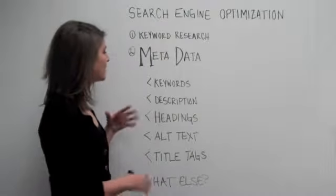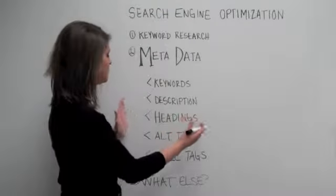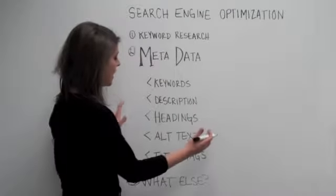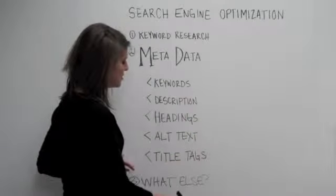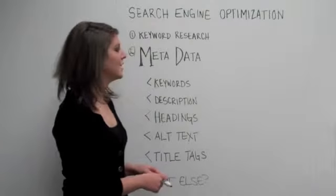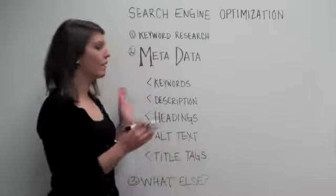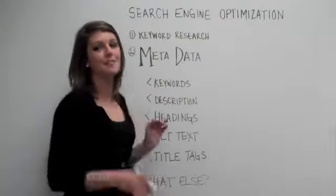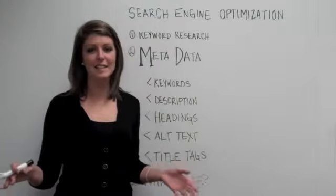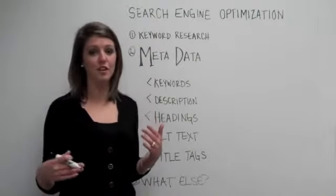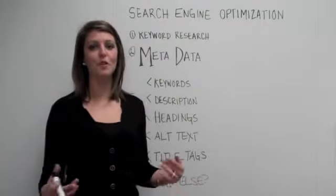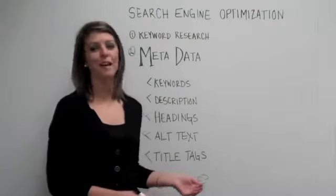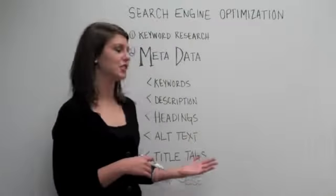But today let's dive into metadata. Metadata consists of keywords that you list on your page, your page's description, headings, alt text for images, and title tags for your page. Now it's important to know that all this metadata is behind the scenes. If you're looking at a web page you will not see any of this metadata actually rendered on the page that the consumer or your web visitor sees. It's all in the background and it's all for the search engines.